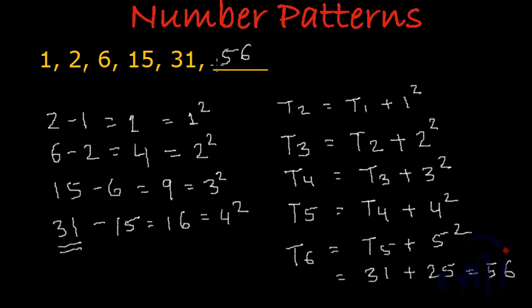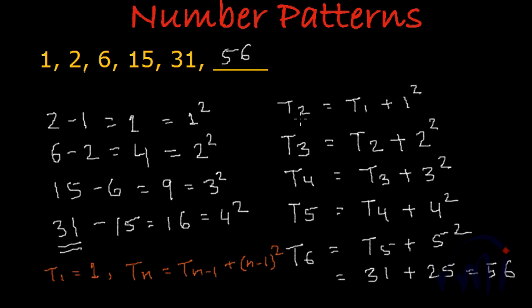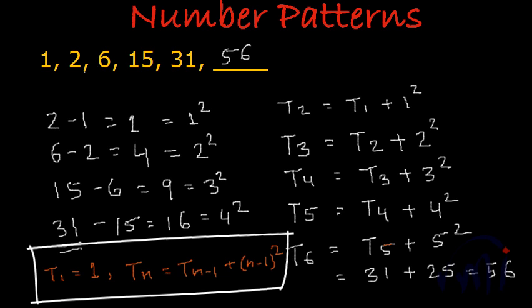What is the generalized format for the series? t1 equals 1, and after that any nth term equals its previous term plus the square of its previous place number. To find the second term we add 1 squared to the first term; for the third term we add 2 squared to the second term; and similarly for the sixth term we add 5 squared to the fifth term. So the sixth term is 56, and the general formula is: t(n) = t(n-1) + (n-1) squared.